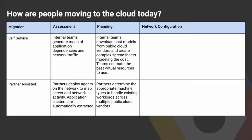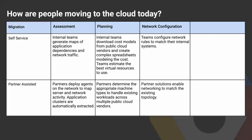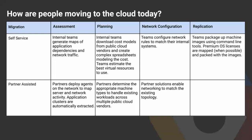In terms of network configuration, in self-service mode teams configure network rules to match their internal systems, whereas in partner-assisted mode partners enable networking to match the existing topology. In terms of replication, in self-service teams package up machine images using command line tools, and premium operating system licenses such as Windows cannot be migrated. Whereas with a partner, the partners replicate the virtual machines into the cloud, accounting for the license transitions.